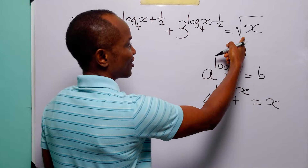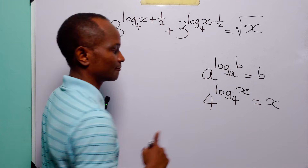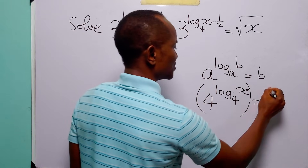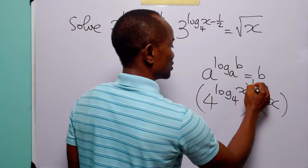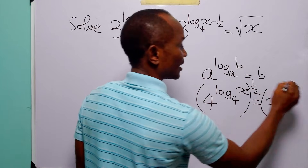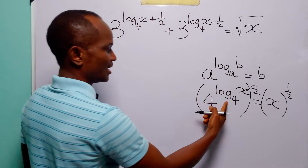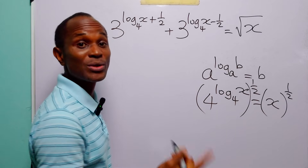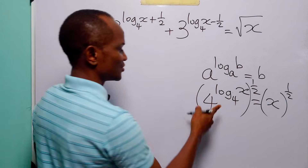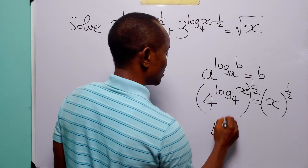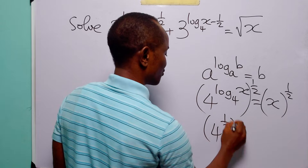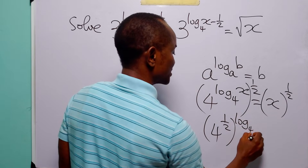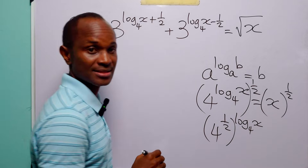And since x is under the square root sign, what we are going to do is raise both sides of this equation to the power half. You know that when we have two powers like this, we can switch their places. So this becomes 4 to the power half, to the power log base 4 of x.